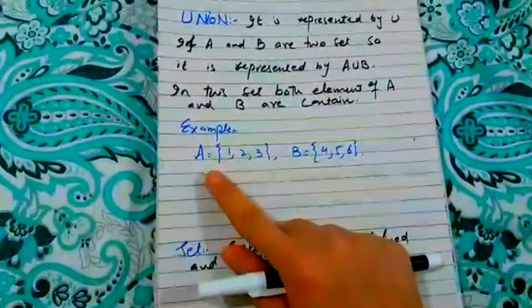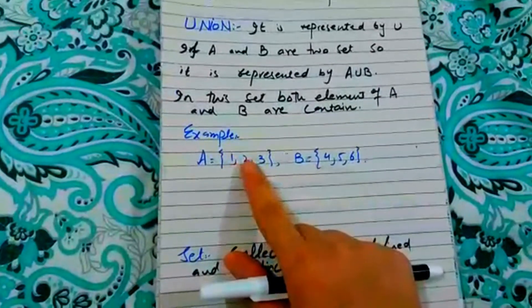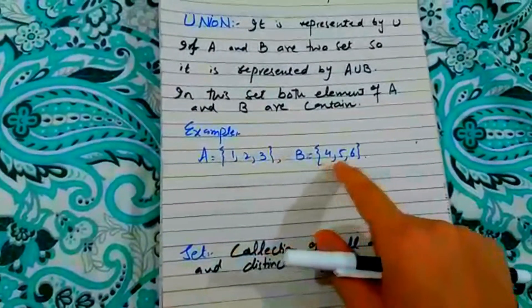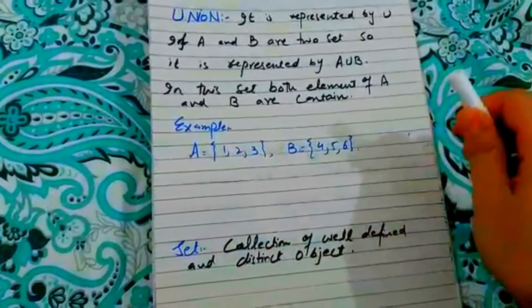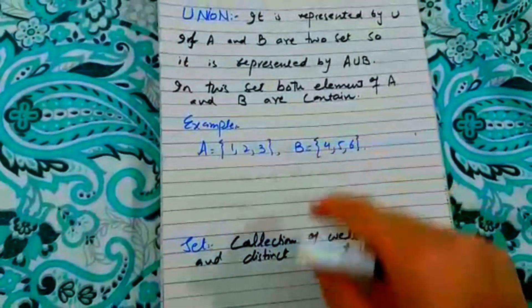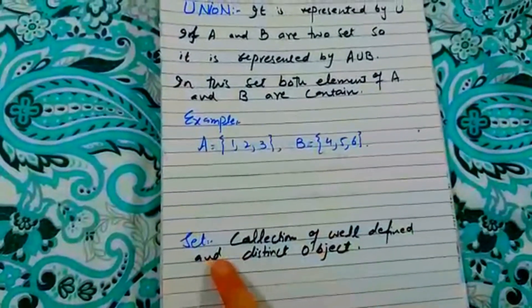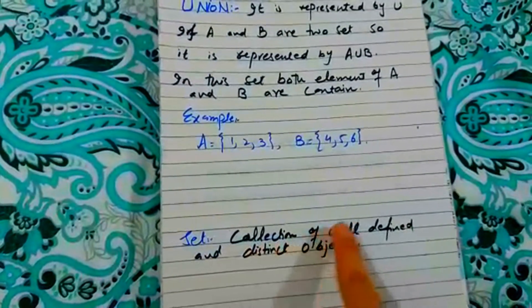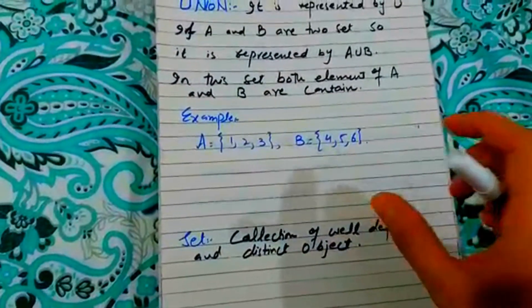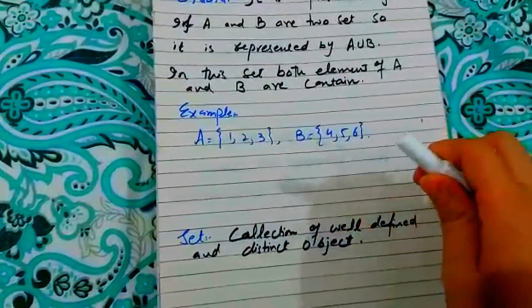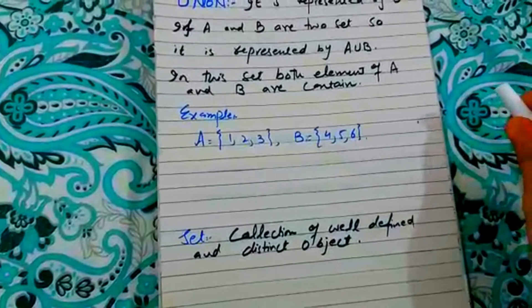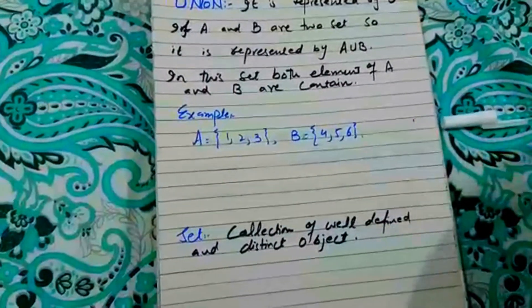For example, {1, 2, 3} is one set and {4, 5, 6} is another set. The set is a collection of well-defined and distinct objects — there is no repetition in a set. Every element is different.